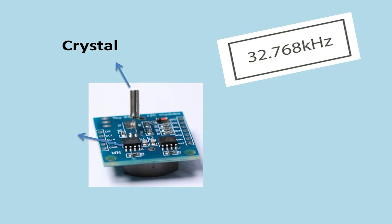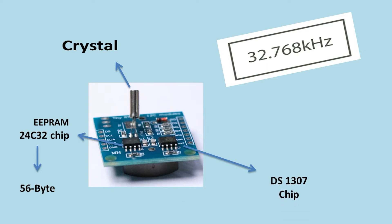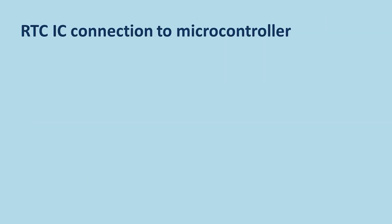Another feature is the EEPROM based on the 24C32 chip, which usually uses 56 bytes, though some models use 32 bytes depending on production. The RTC chip used is the DS1307.